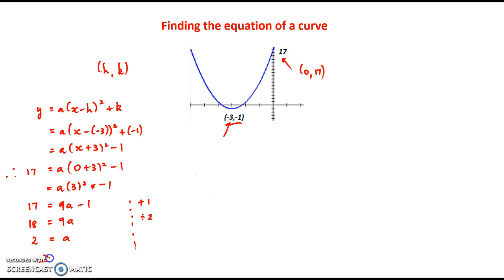Now that implies that our final equation or our complete equation will be 2, where 2 replaces the value of a, times (x plus 3) all squared minus 1. And there we have it, the equation of the curve that has been given. Thanks for listening.